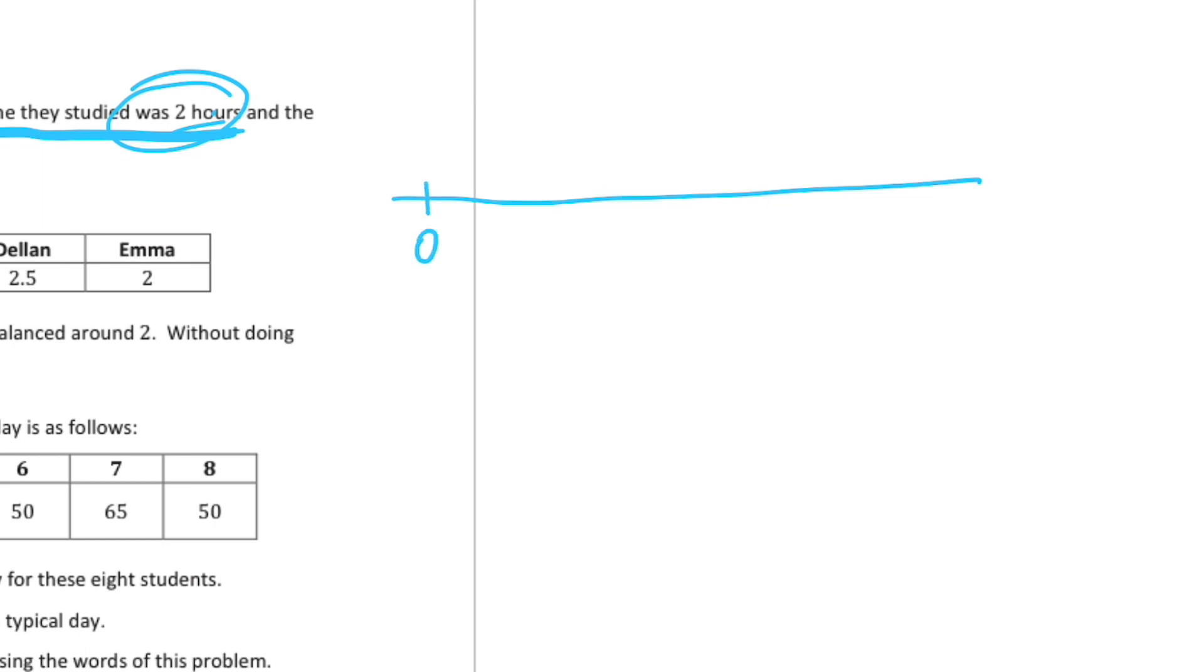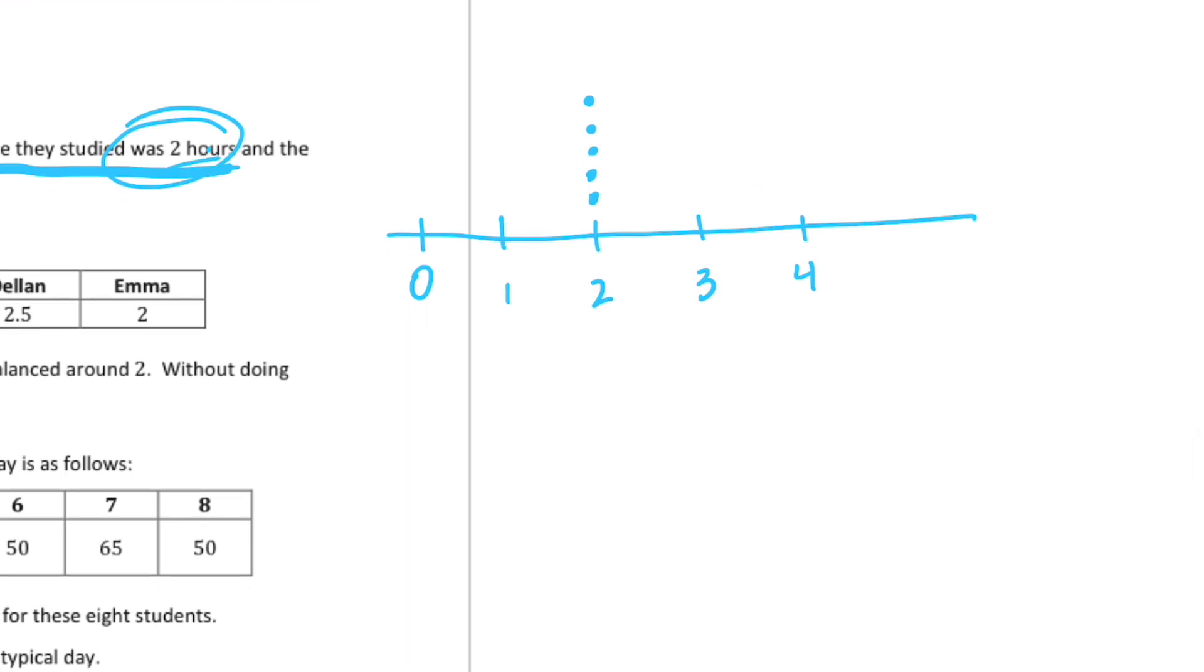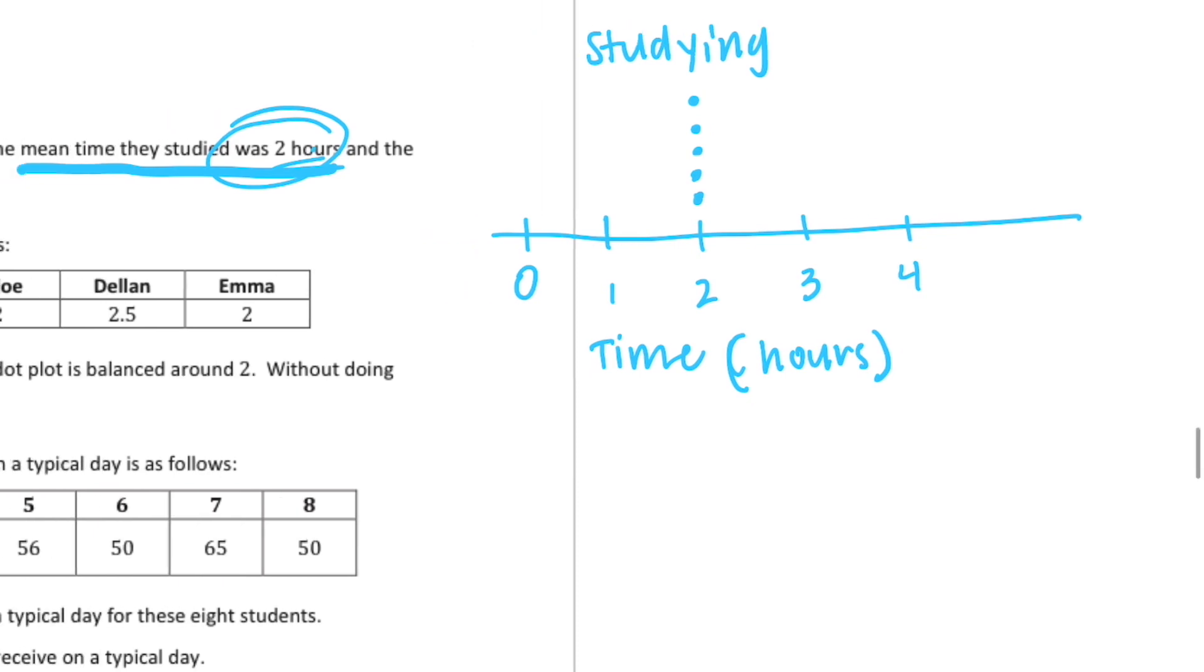So let's draw that. I'm going to do zero, one, two, three, four, and then I'm going to have five at two. One, two, three, four, five, and then we just need to label it. So let's call it studying and then our, it wasn't time in hours. So that's like five different students at two studied for two hours.